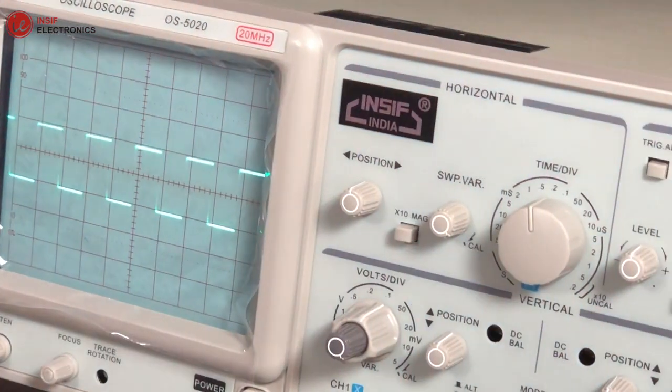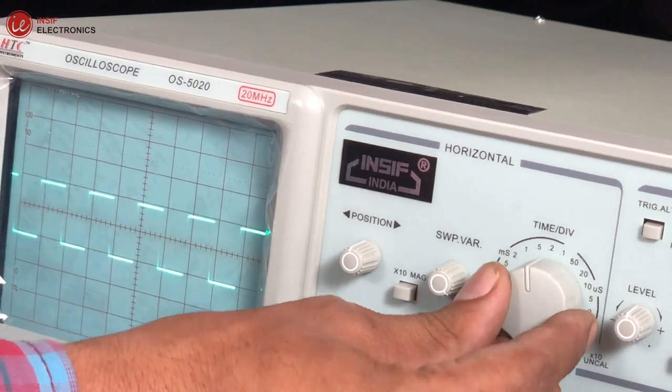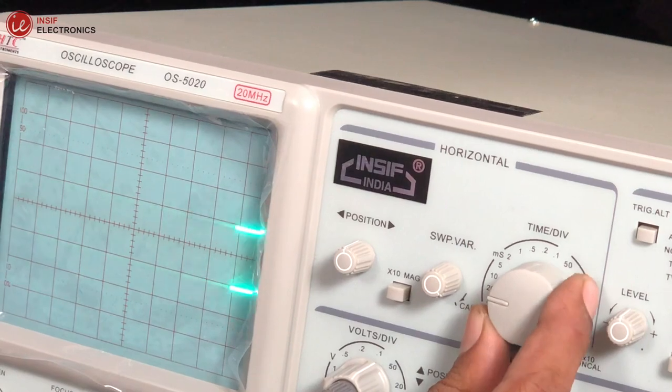This is time per division knob. By rotating it, we can select different time divisions for the input signal. By changing this, we can observe input signal of different frequencies.